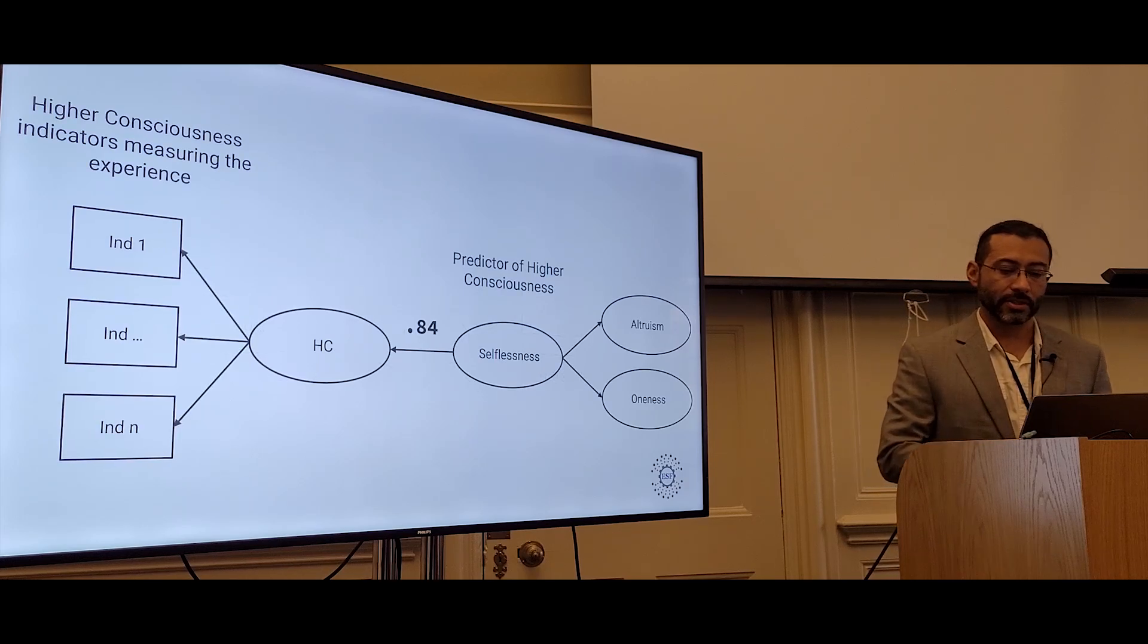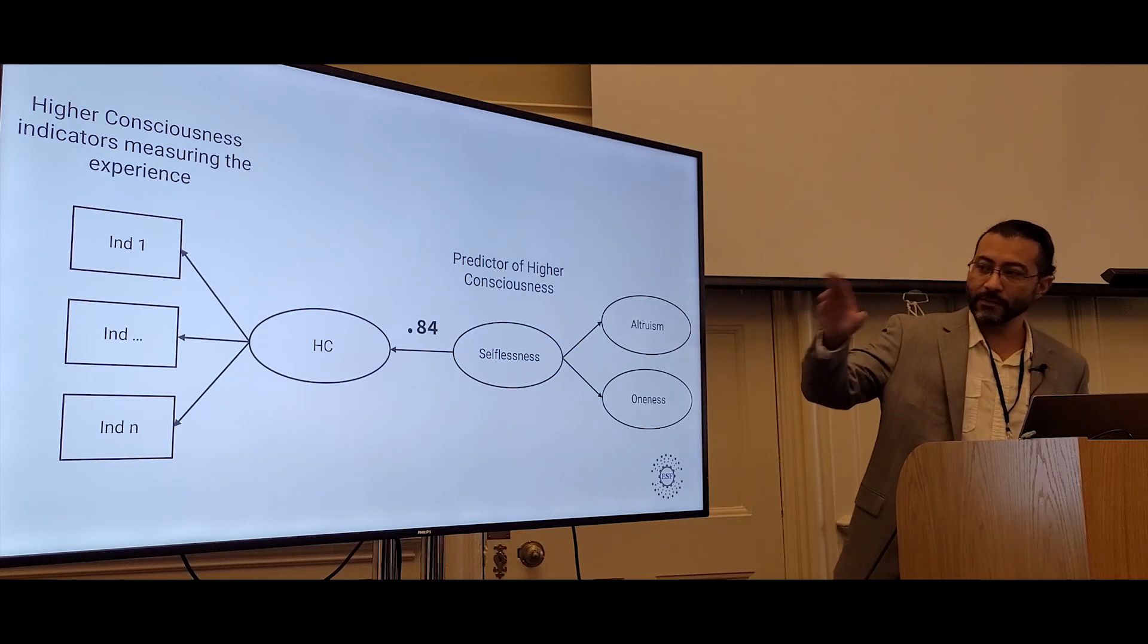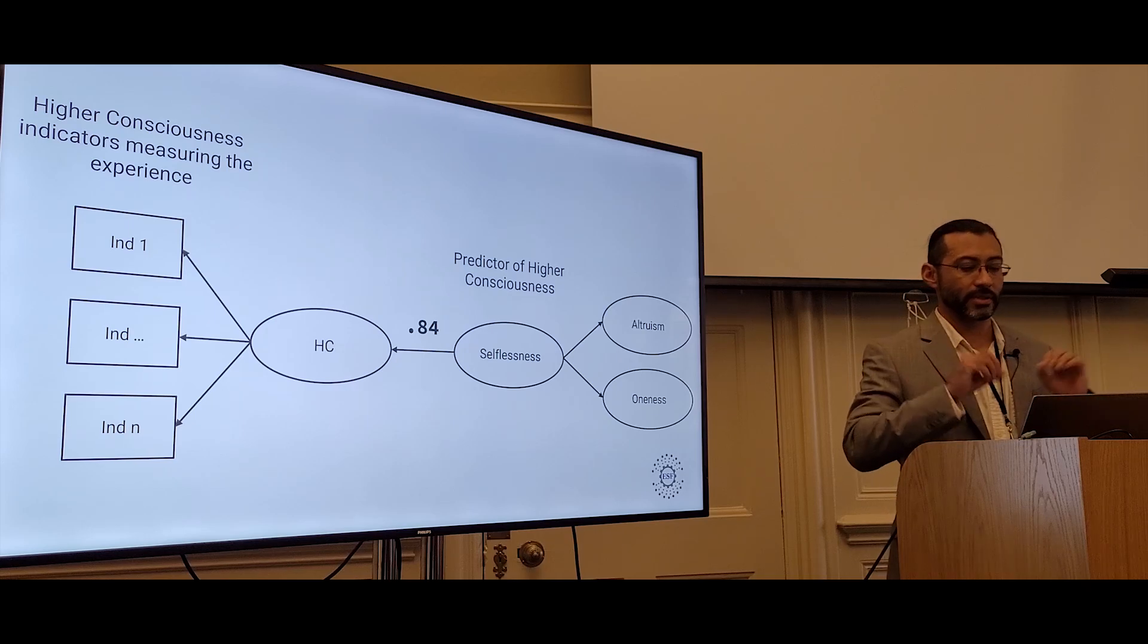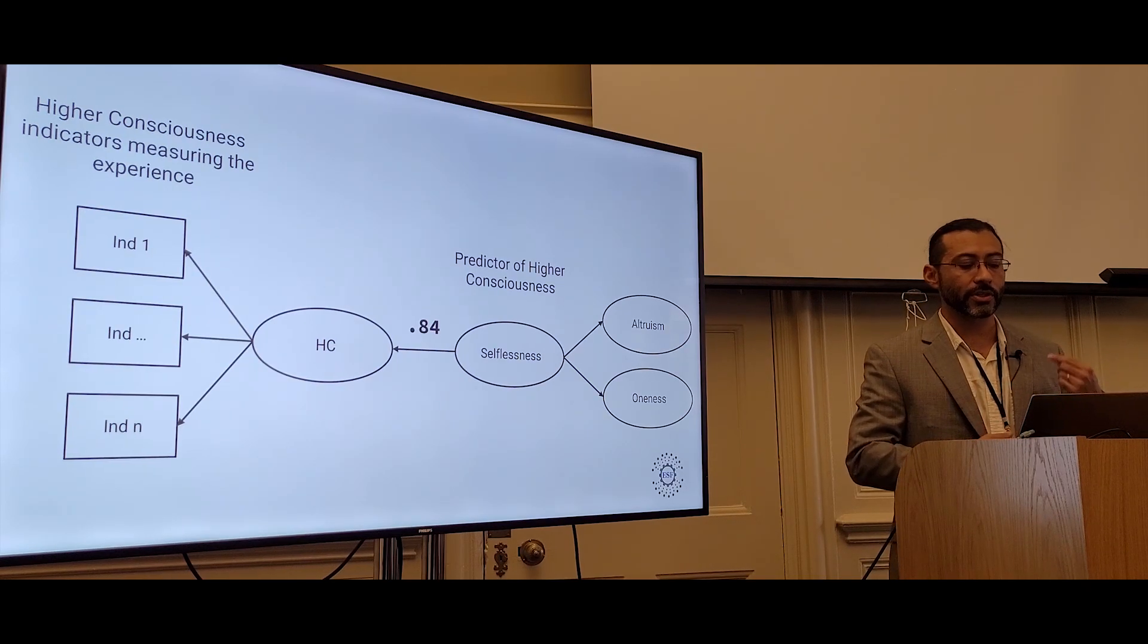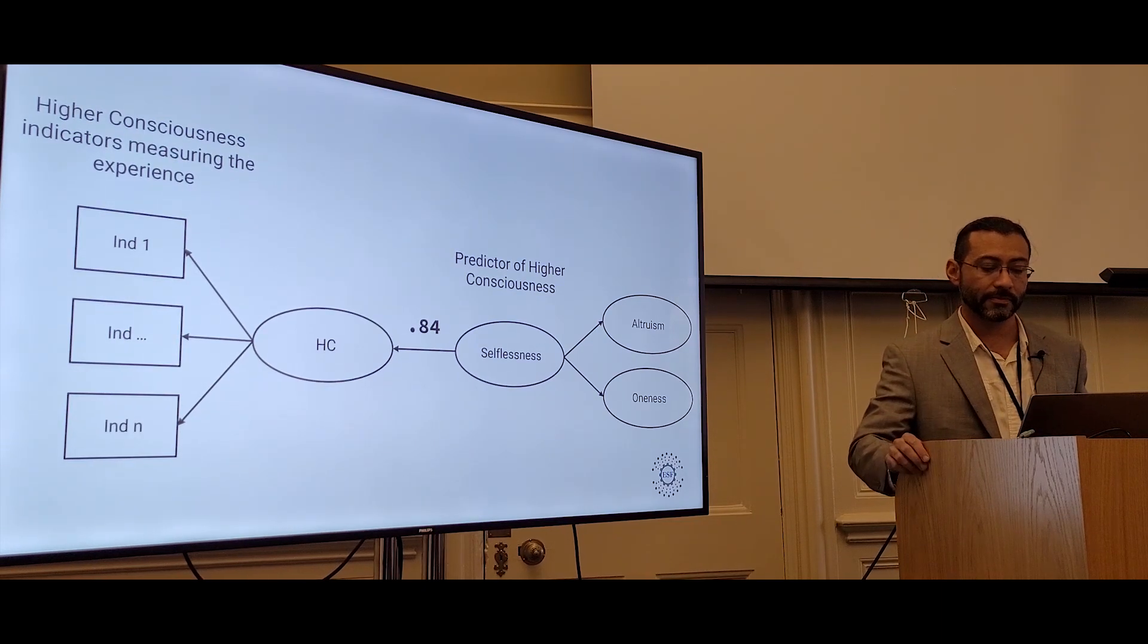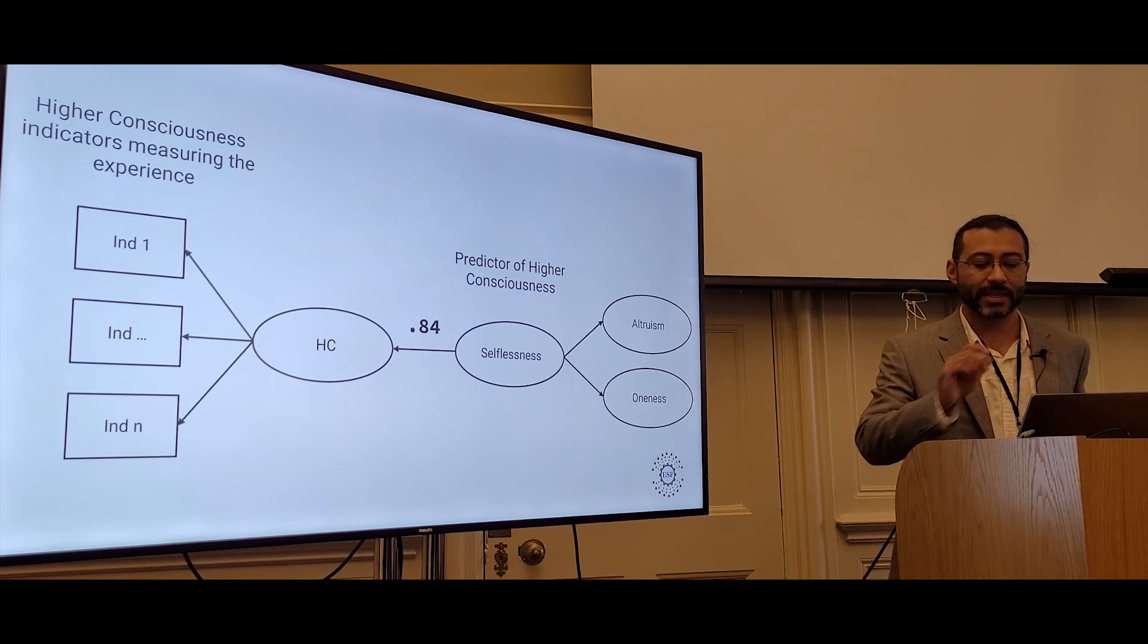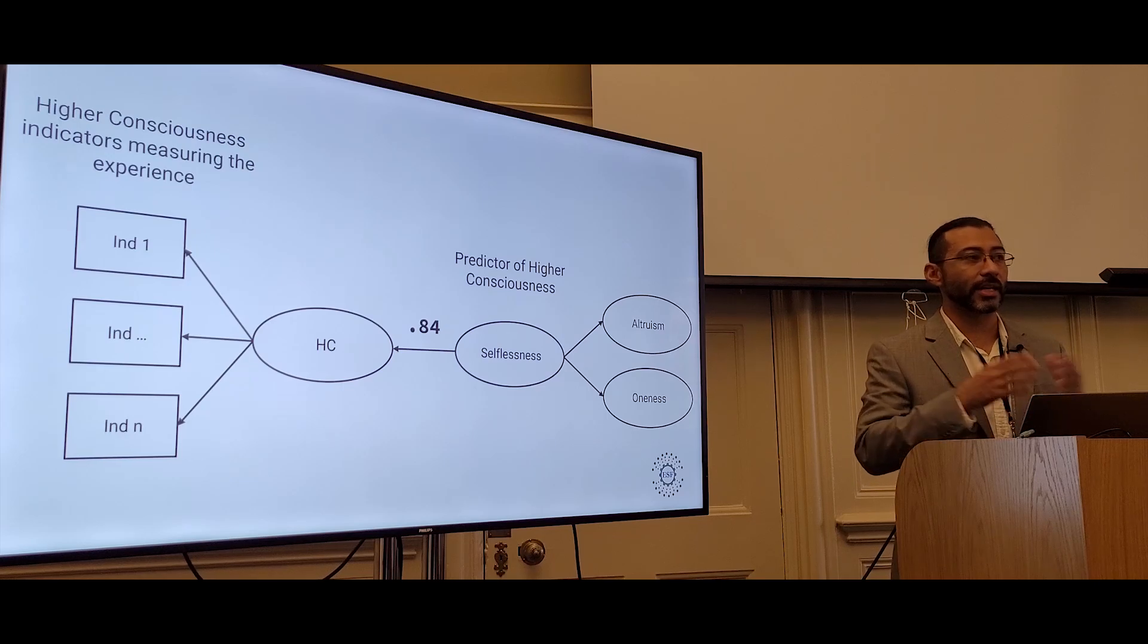Here's an example of our methodology, where we have a representation of an important relationship between selflessness and higher consciousness. Selflessness is comprised of two components in this model: altruism, representing a person's propensity to do good in the world, and oneness, representing a person's belief in the unity of humanity. When combined, they become a powerful predictor of higher consciousness. This model demonstrates that perhaps a person's spiritual practice might be less important than their underlying belief systems and the amount of unconditional love they share with others.